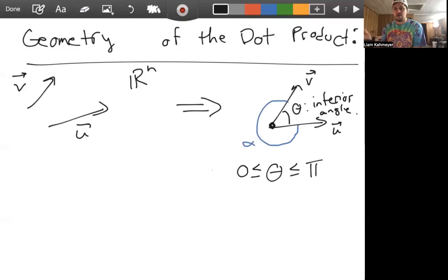We are interested in the interior angle, meaning theta for us is always going to be between zero and pi. And so of the two angles that these vectors make, we'll always choose the smaller one.